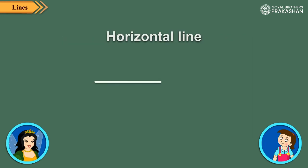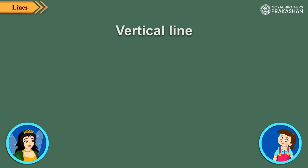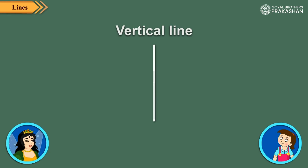This is a horizontal line. Horizontal lines are also called sleeping lines. This is a vertical line. Vertical lines are also called standing lines.